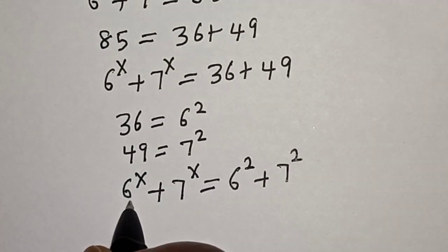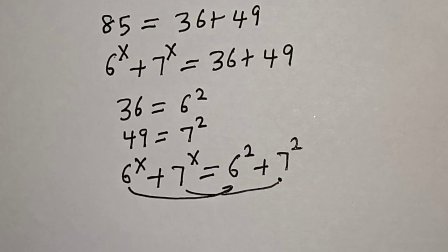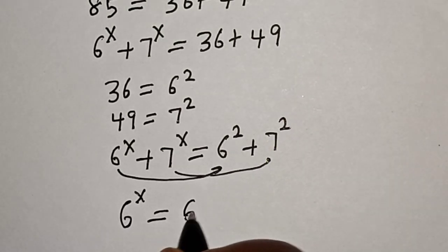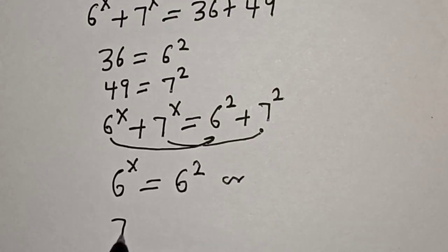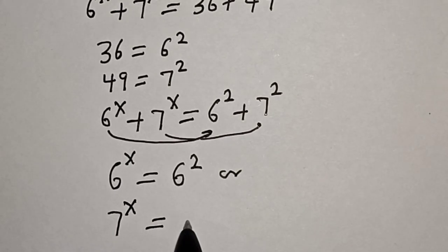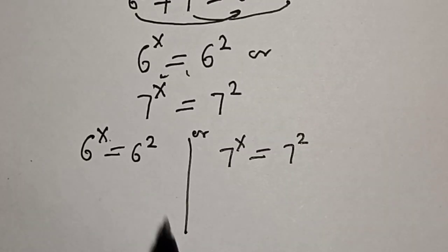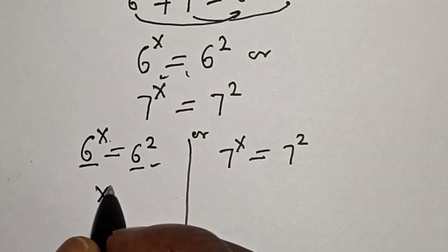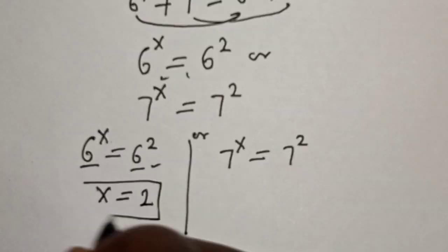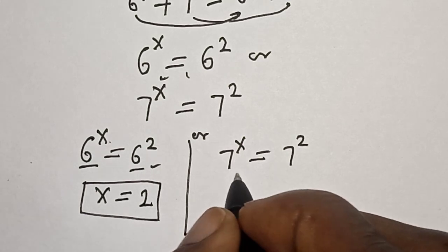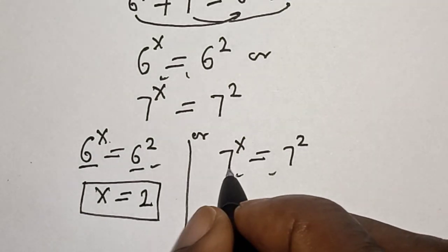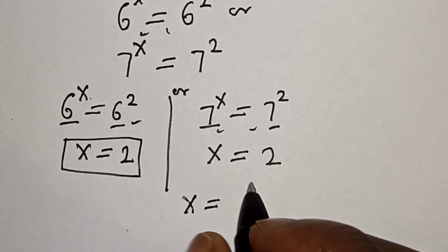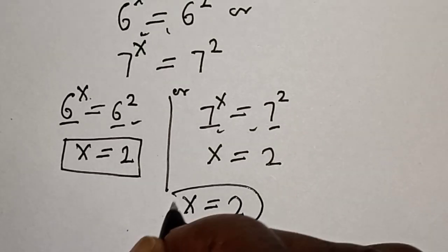By comparing, this side equals this side: 6 raised to power s is equal to 6 squared, and 7 raised to power s is equal to 7 squared. Since they have the same base, s is equal to 2. That is the value of s.